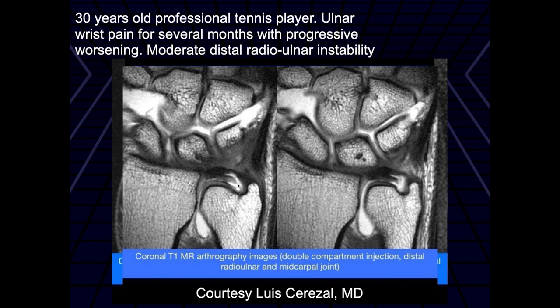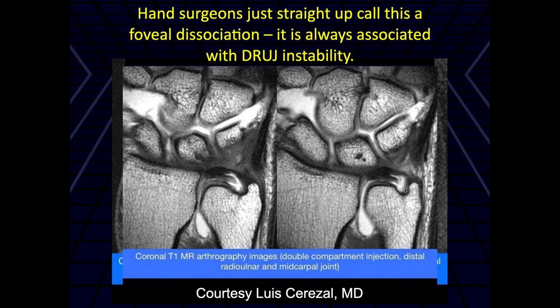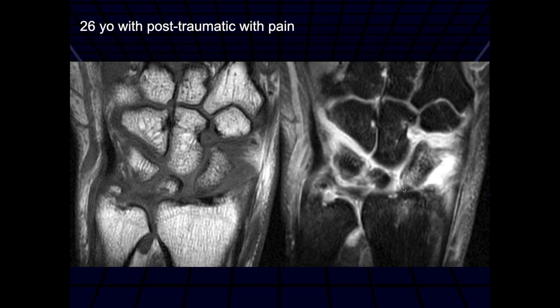Here again, you can see the upper laminar tear right through here. So here we have a 26-year-old with post-traumatic pain, and we can see a remote-appearing ulnar styloid avulsion fracture. It looks like the lower laminal attachments attach to that ulnar styloid avulsion fragment.